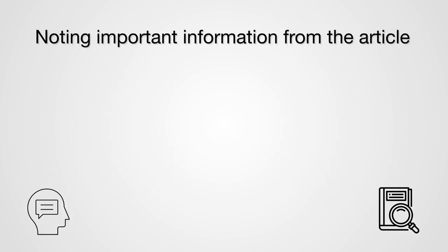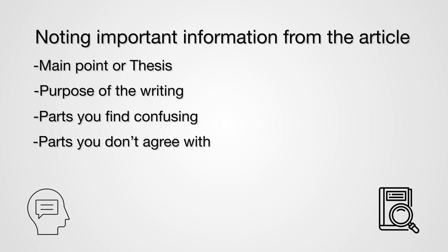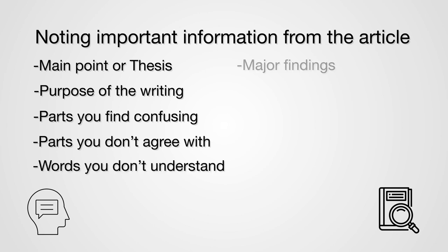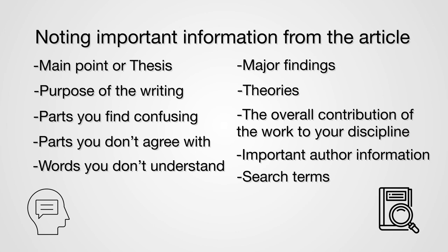Annotation — really interacting with a text — includes noting the important stuff about an article: things like the main point or thesis, the purpose of the writing, parts that you find confusing, parts you don't agree with, words you don't understand, major findings, theories (especially if they're the ones you're discussing in class), the overall contribution of the work to your discipline, how it compares to other articles you've read on the same topic, important information about the author or authors, and search terms for finding more information on the same topic.